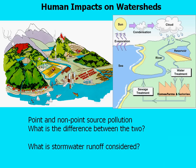Two terms you hear when discussing water issues are point and non-point source pollution, and it's important that you understand the difference between the two. Point source pollution is a type of pollution where you know where the source is — a straight pipe from a factory into a stream, or a dump truck that has tipped over and you know where pollutants are entering a stream. Those are identifiable points where pollution is entering the water stream or the watershed.